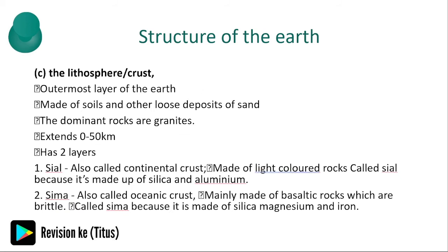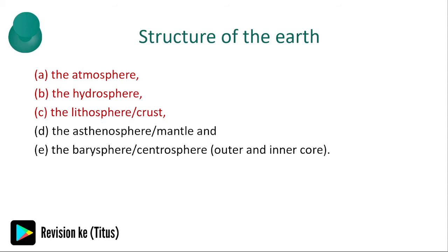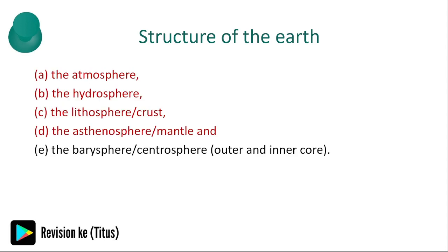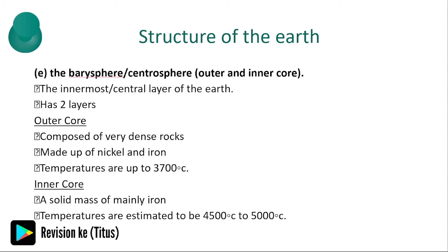The crust is the outermost layer of the earth, made of soil and other loose deposits of sand. It has two layers: sial and sima. The mantle is the layer lying between the crust and the core, made of iron and magnesium, and has two layers: the upper mantle and the lower mantle. Finally, the core is the innermost or central layer of the earth, and also has two layers: the outer layer and the inner layer.